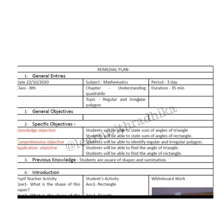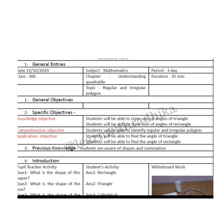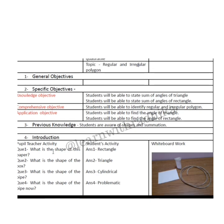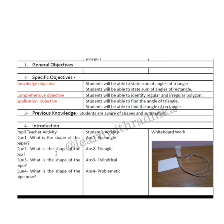There are specific objectives based on knowledge, comprehension, and application. Students will be able to state the sum of angles of triangles and the sum of angles of a rectangle. For comprehension, students will be able to identify regular and irregular polygons. The previous knowledge assumed is that students were already aware of shapes and their angle summation.